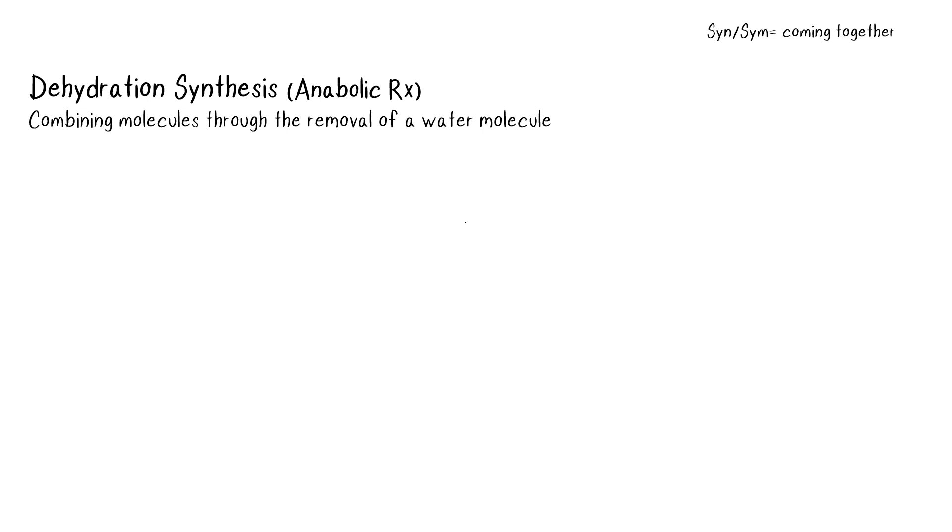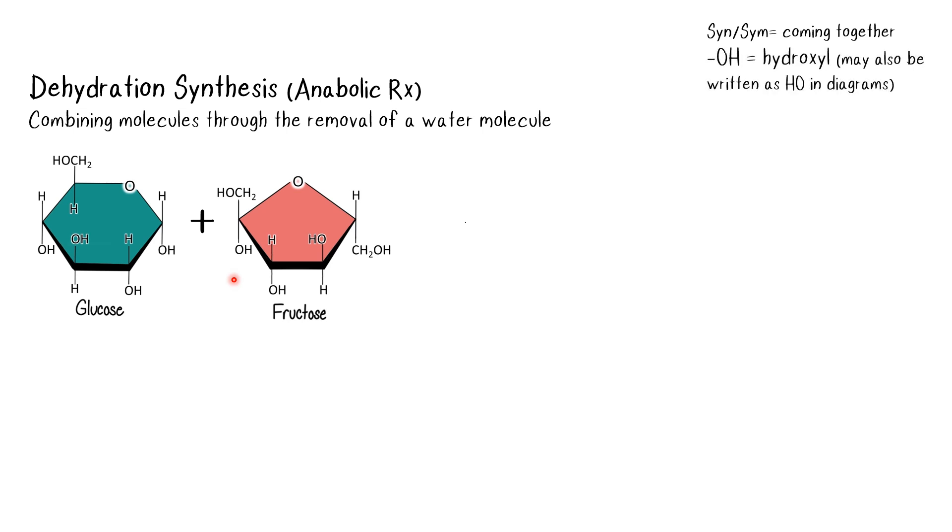So the specific example we're going to look at involves glucose and fructose, both of which are simple carbohydrates, but no matter what molecules we start with, the reaction is going to involve these areas of the molecule where we have a hydrogen bound to an oxygen. This is a functional group called a hydroxyl group.